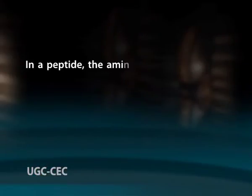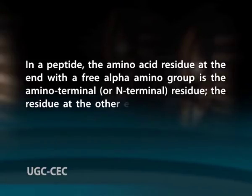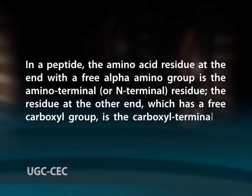Most natural polypeptide chains contain between 50 and 2000 amino acids and are commonly referred to as proteins. Proteins may have thousands of amino acid residues. Although the terms protein and polypeptide are sometimes used interchangeably, molecules referred to as polypeptides generally have molecular weights below 10,000 kilo Dalton and those called proteins have higher molecular weights. An amino acid unit in a peptide is often called a residue. The amino acid residue at the end with a free alpha amino group is the amino terminal or N-terminal residue, and the residue at the other end with a free carboxyl group is the carboxy terminal or C-terminal residue.